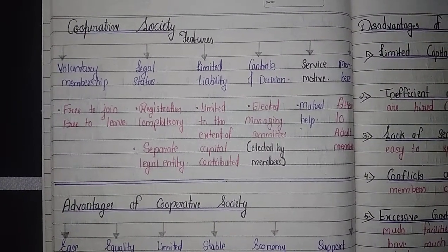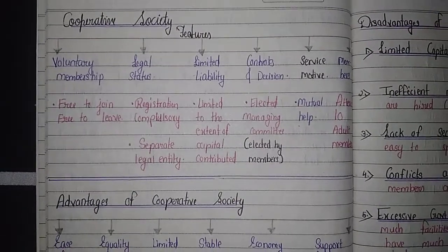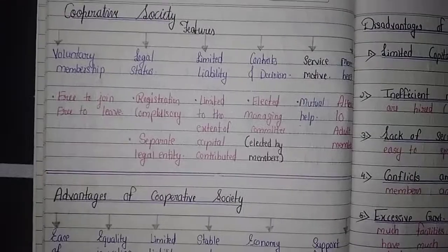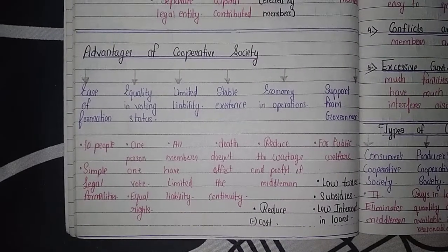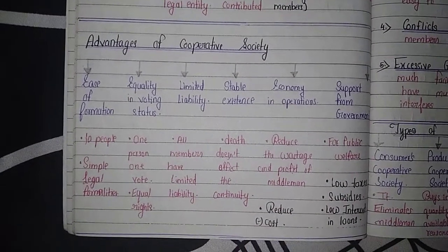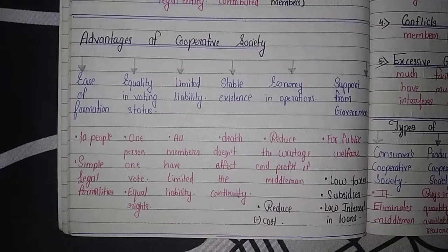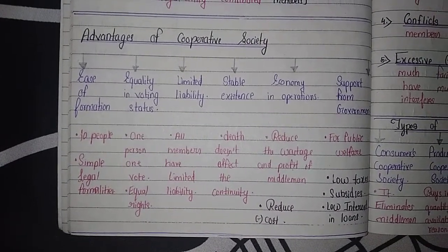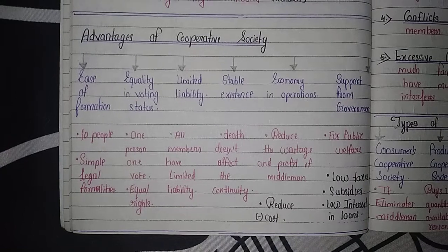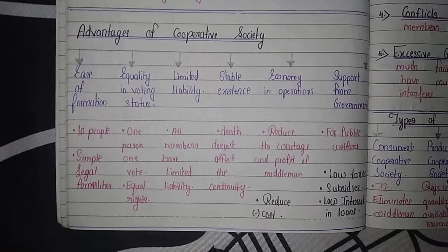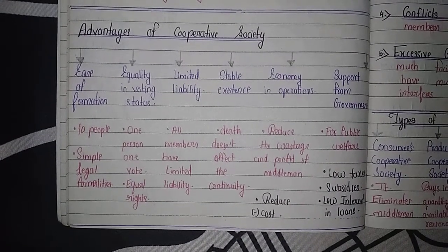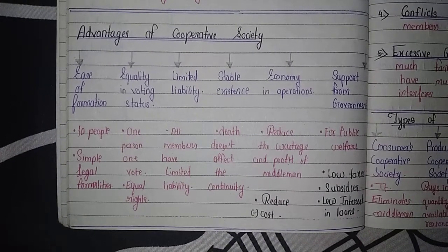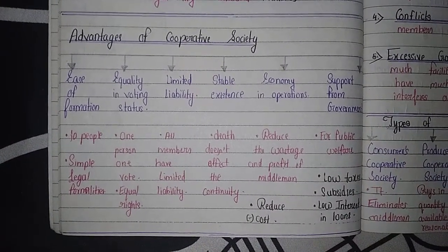At least 10 adult members are required to open a cooperative society, and the maximum is 50 members. Now the advantages of cooperative society: the first is ease of formation — only 10 people are required and simple legal formalities are needed.